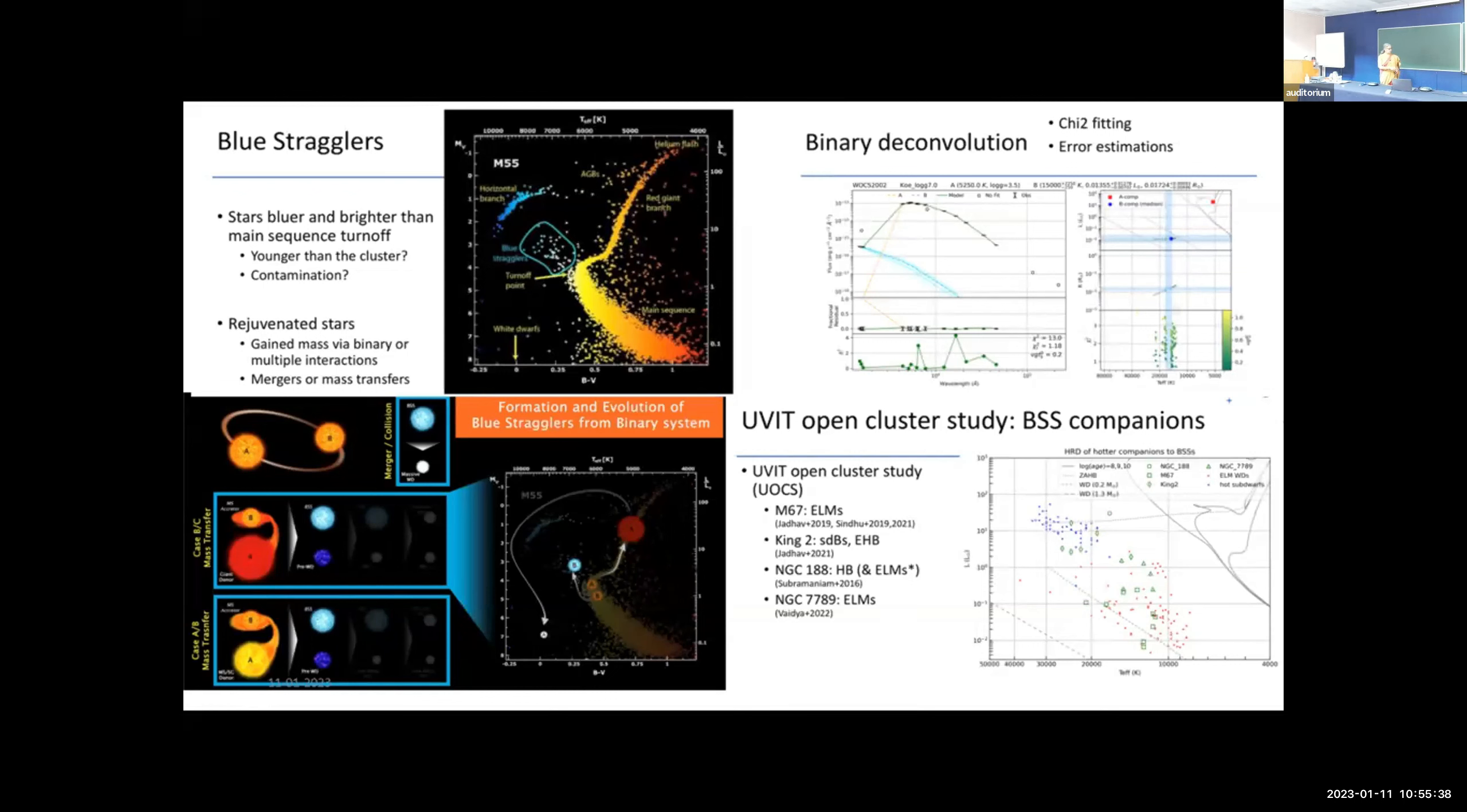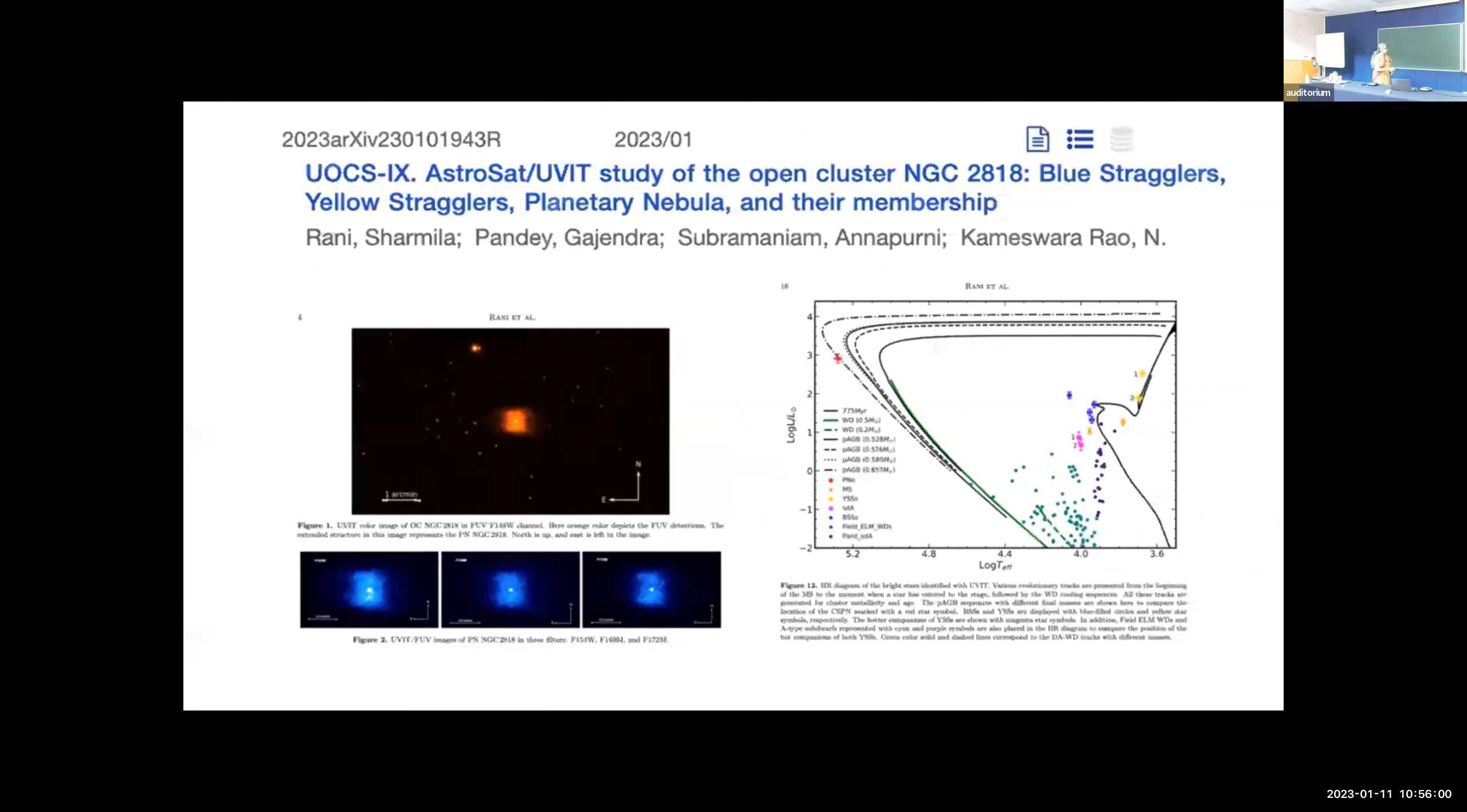In the field we have compared the field populations which come from sub-dwarf B stars, sub-dwarf A type stars, low mass white dwarfs, extremely low mass white dwarfs, and these remnants also match. So there are different kinds of classification but no unique classification of stars which are falling in this gap area. And I just wanted to point out the next study which is the latest one which was just accepted recently and coming from this year only.